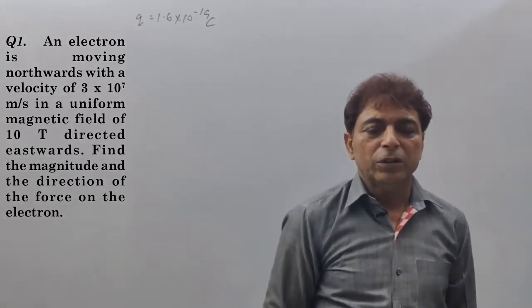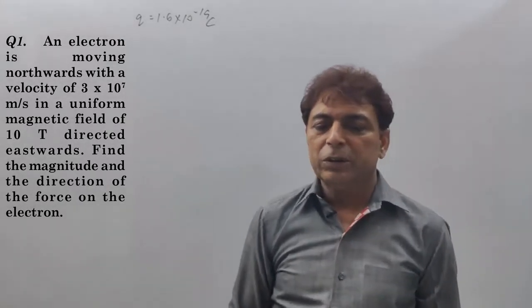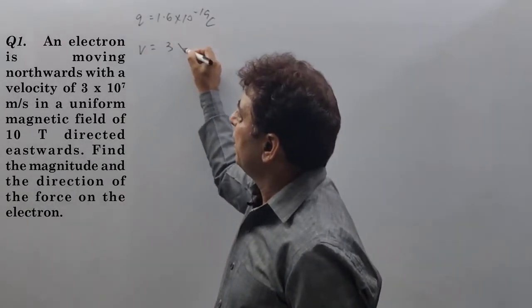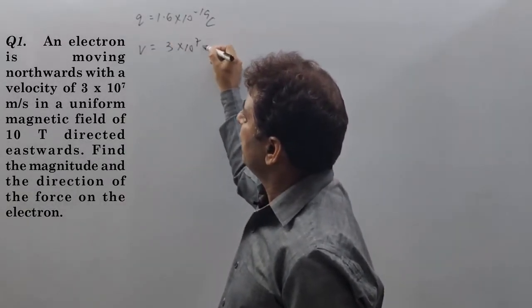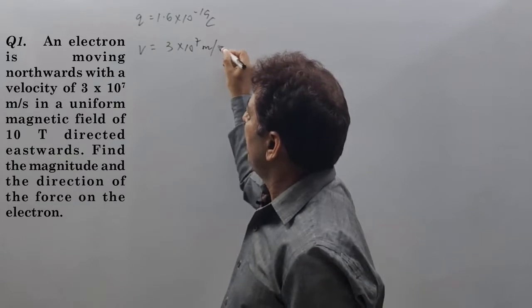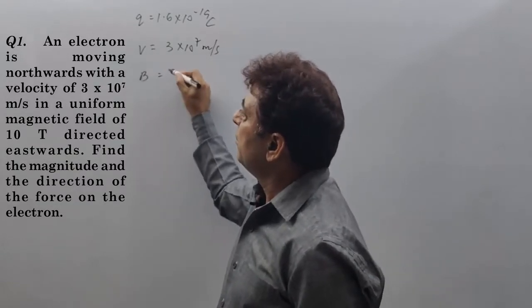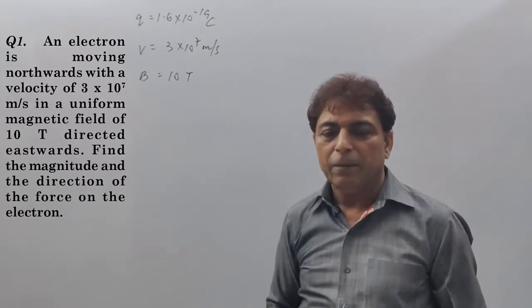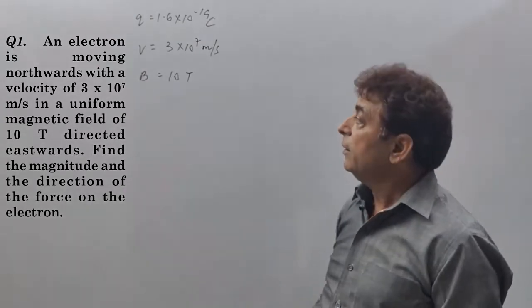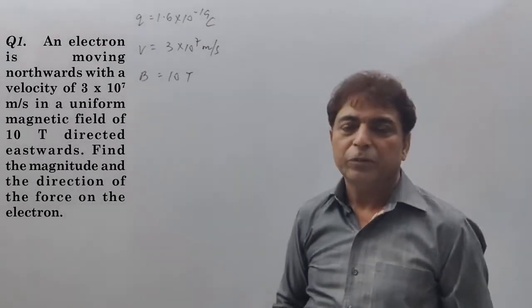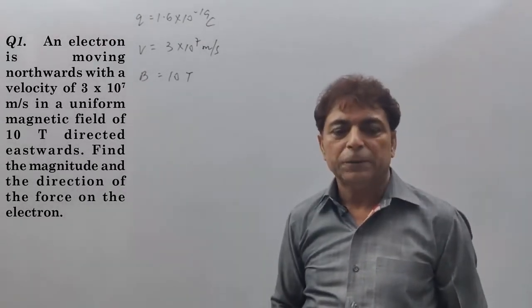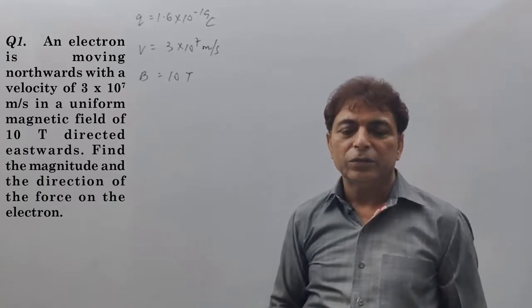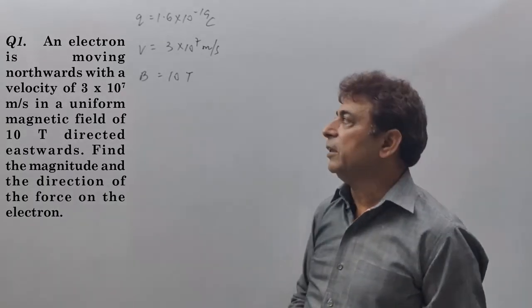The electron is moving with a speed of 3 × 10⁷ meter per second in a magnetic field of 10 tesla directed towards east. Find the magnitude and direction of the force on the electron.